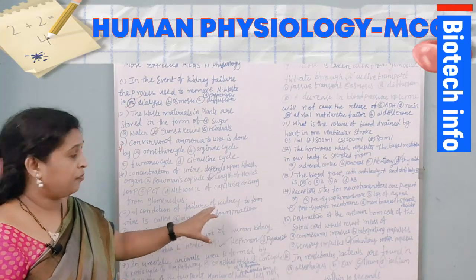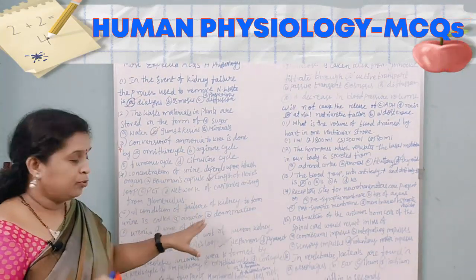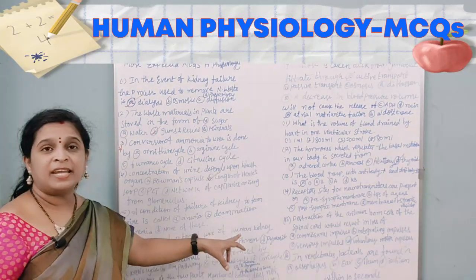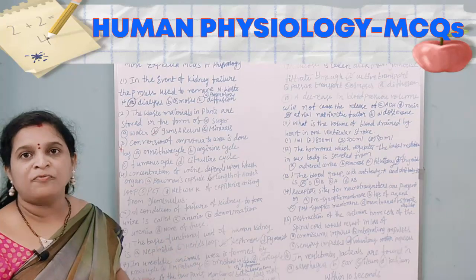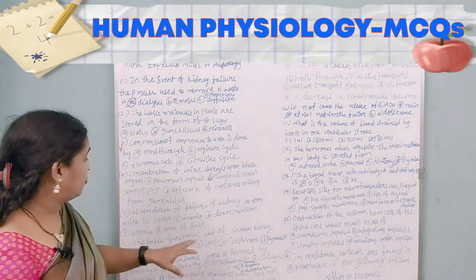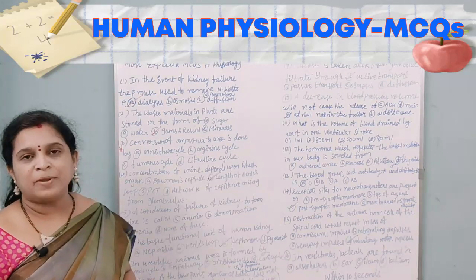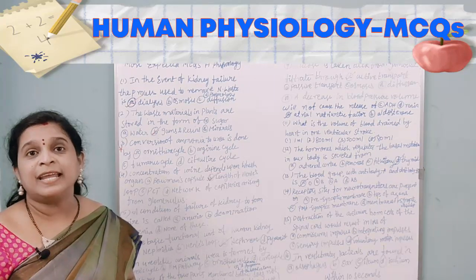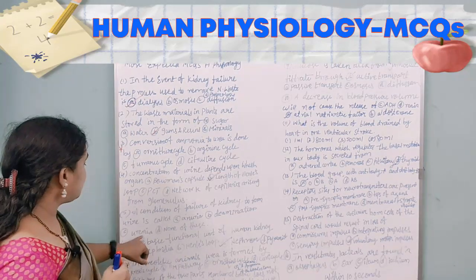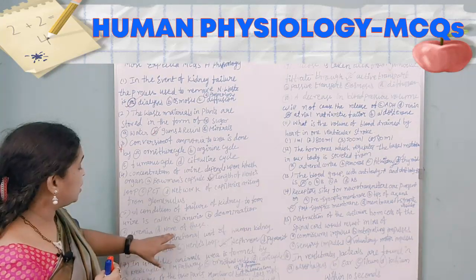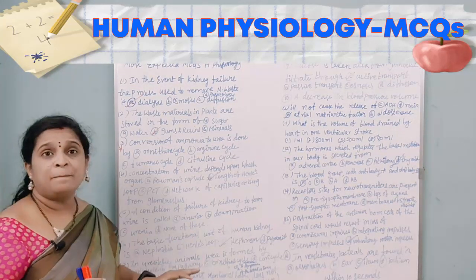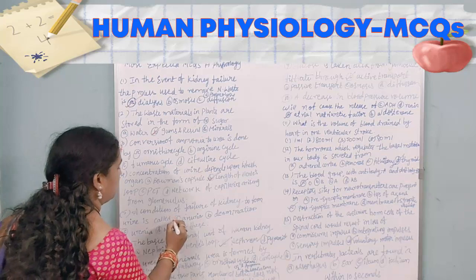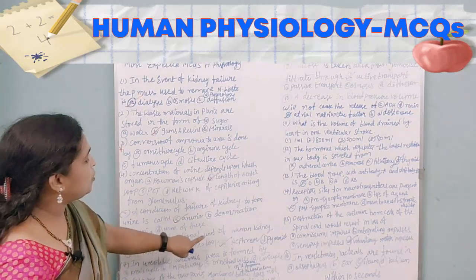The fifth question: the condition of failure of a kidney to form urine is called — anuria, deamination, uremia, or none of these? Deamination is removal of an amino group from an amino acid. Uremia results from obstruction like kidney stones or tumors — also not correct here. Anuria refers to the absence of urine formation, with high levels of water pressure in the blood. The answer is anuria.